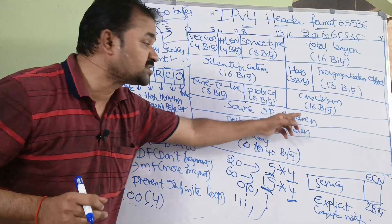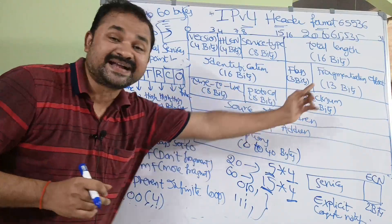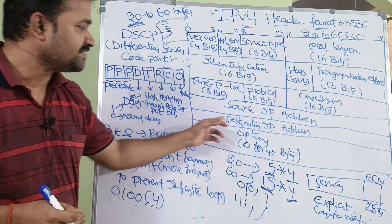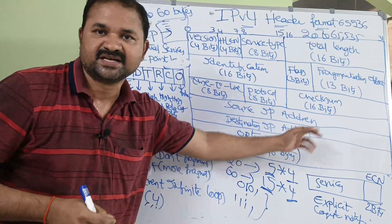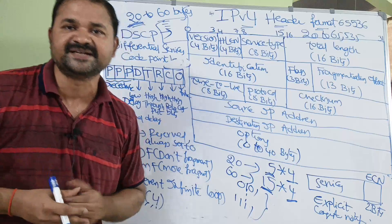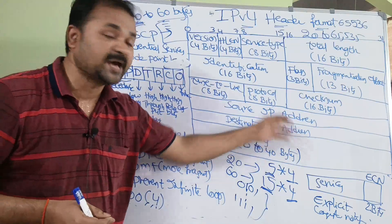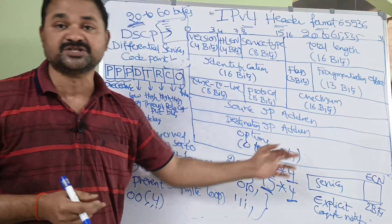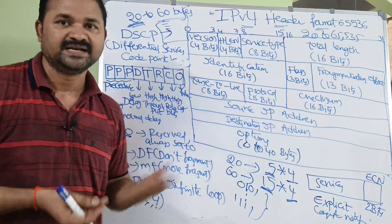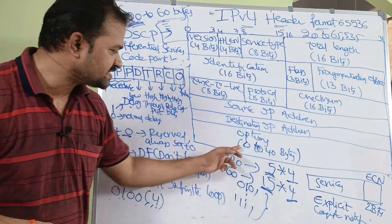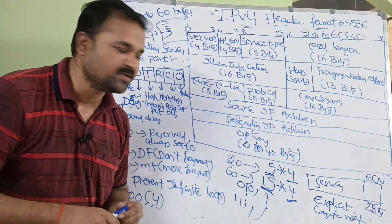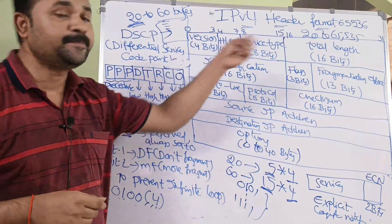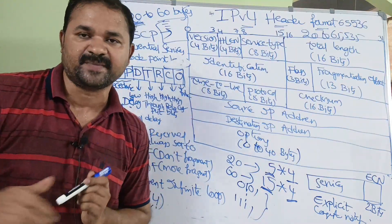And the next one is Source IP address, which is of size 32 bits — it specifies the IP address of the source machine. And the next one is Destination IP address, which is of size 32 bits — it specifies the IP address of the destination machine. And the last one is Options, which includes optional data. The minimum size is 0 and the maximum size is 40 bytes. So this is about the IPv4 header format.